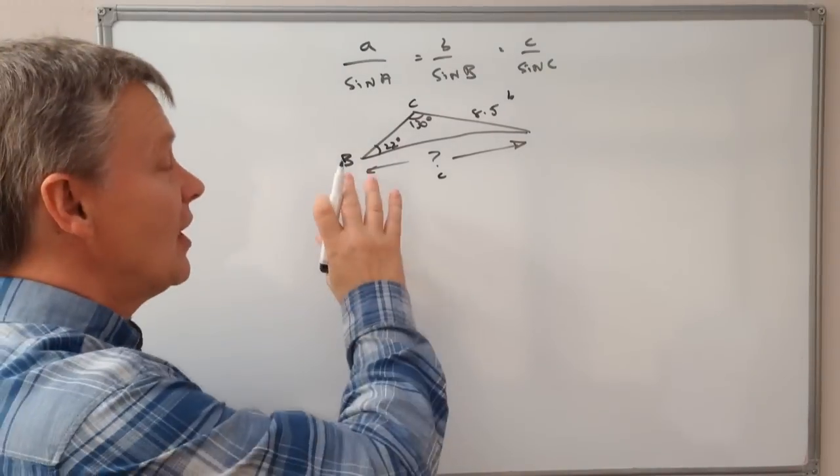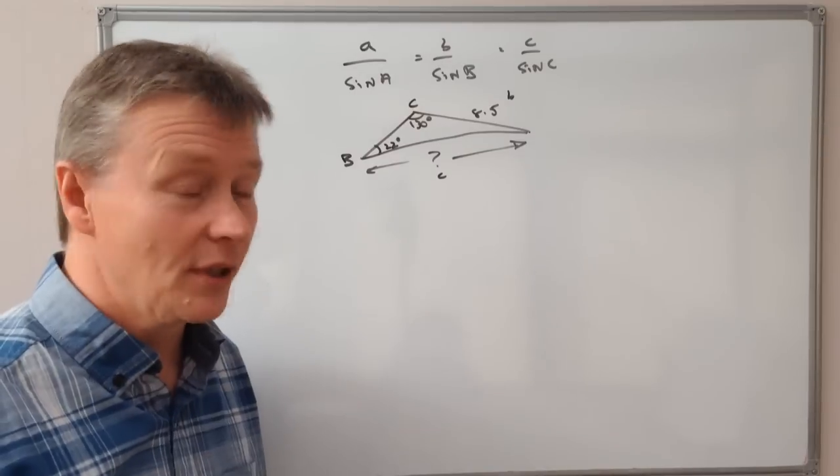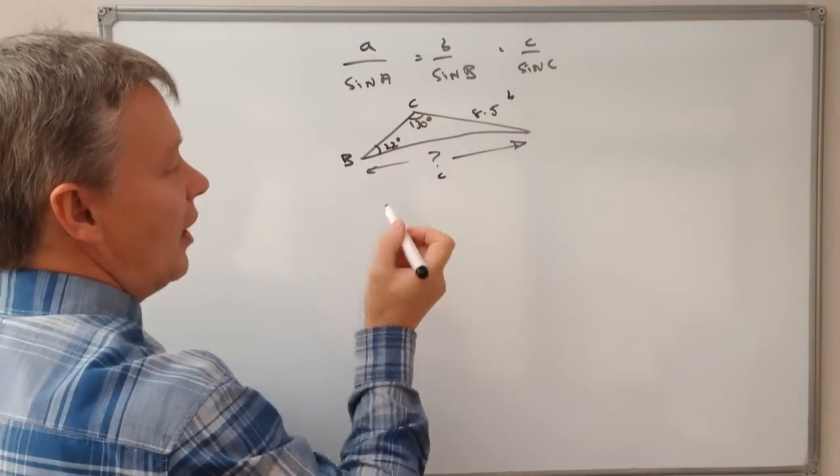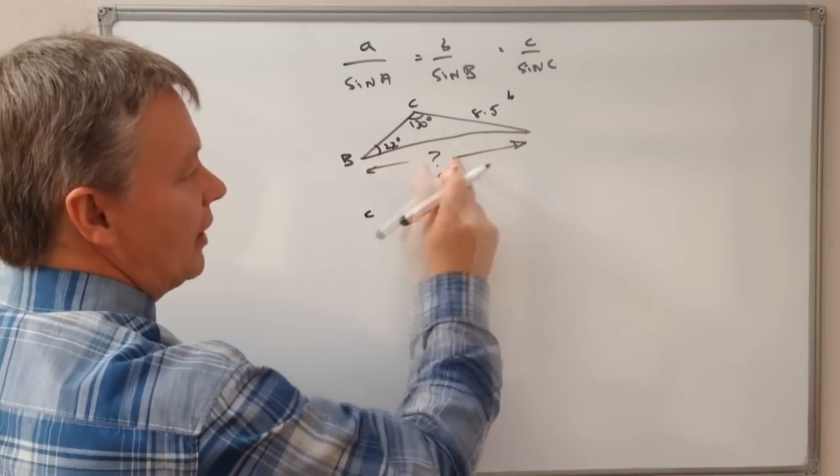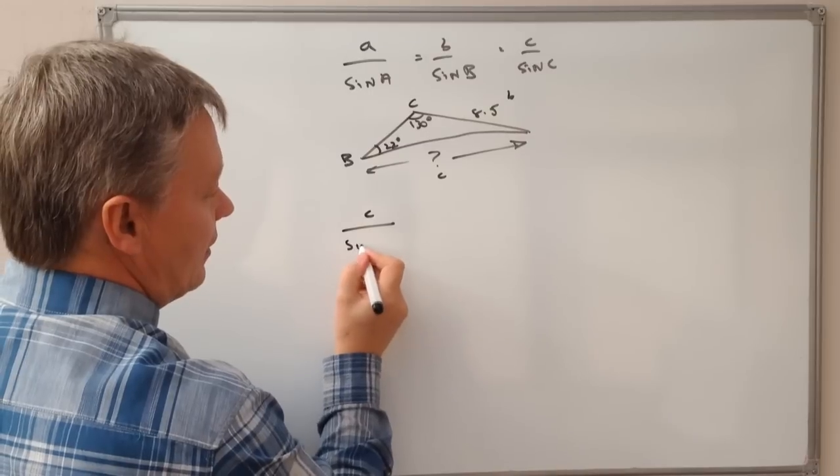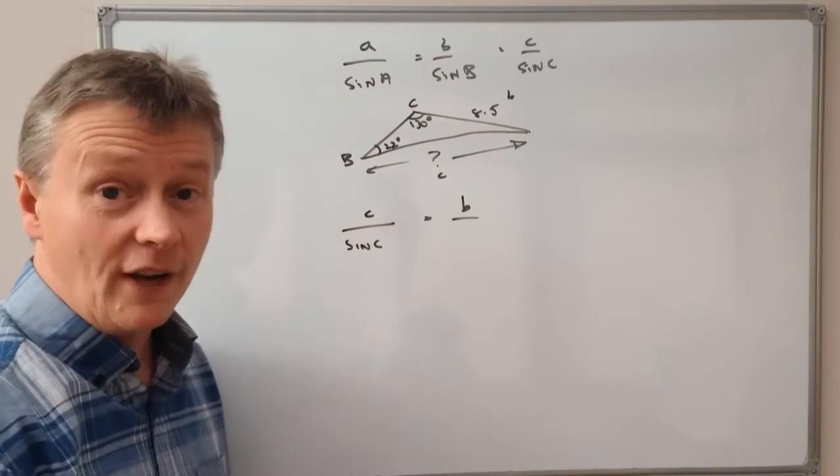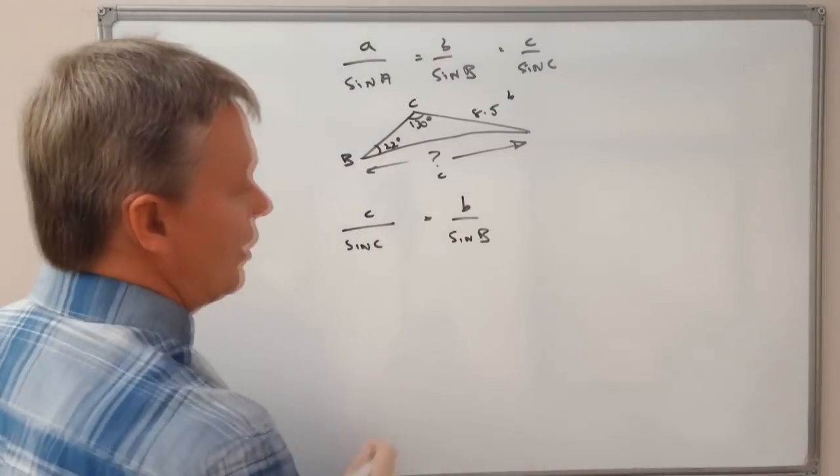Once you've actually labelled your diagram, you're then in a position where you can start to put some numbers. So I'm going to say that C over sine C. I've got C, which is what I'm looking for, divided by sine C, and that's going to be equal to B, which we know is 8.5, and that's going to be divided by sine B.